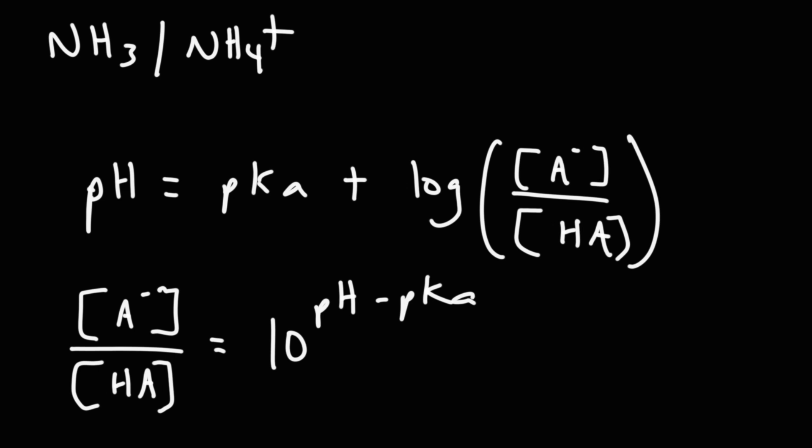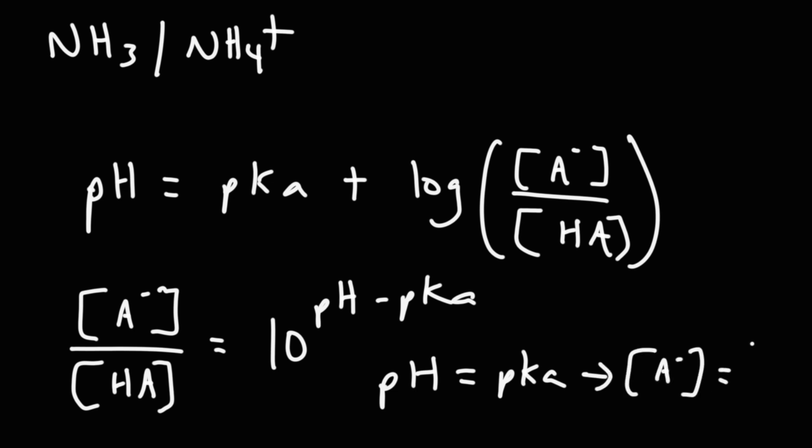For a buffer solution, the pH equals the pKa whenever you have equal amounts of base and conjugate acid. There are also formulas in the formula sheet for other situations, such as calculating the pH of a polyprotic acid like H₃PO₄, for amphoteric ions in water, or for finding the pH of an amphoteric salt — feel free to check the formula sheet below for those.